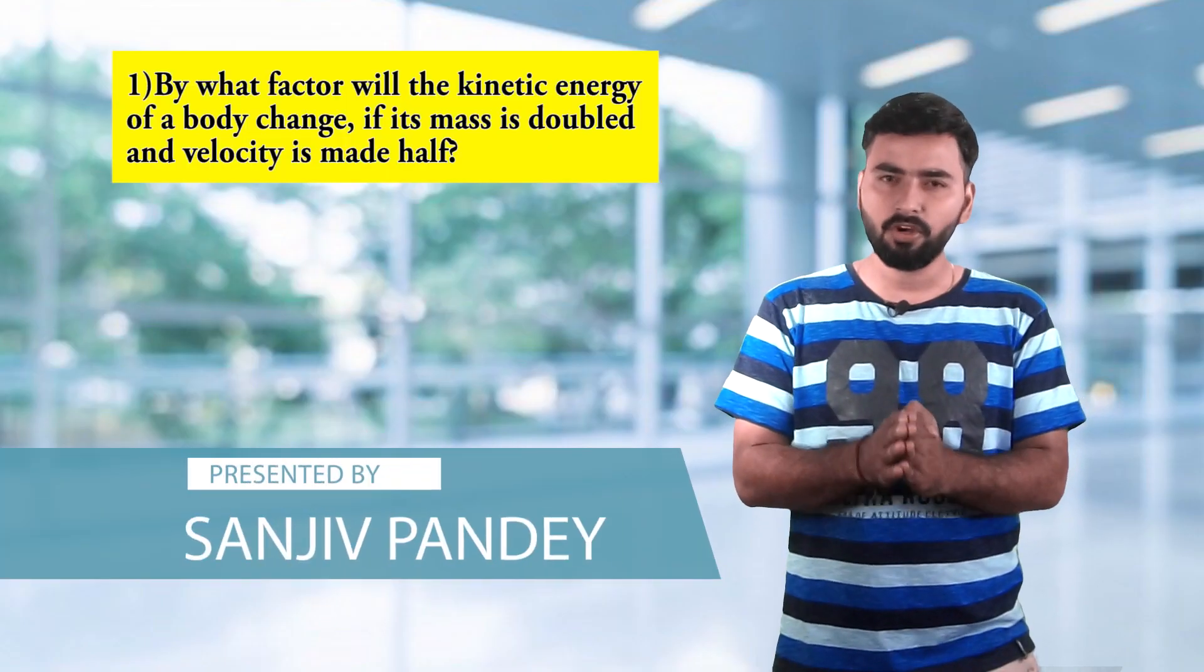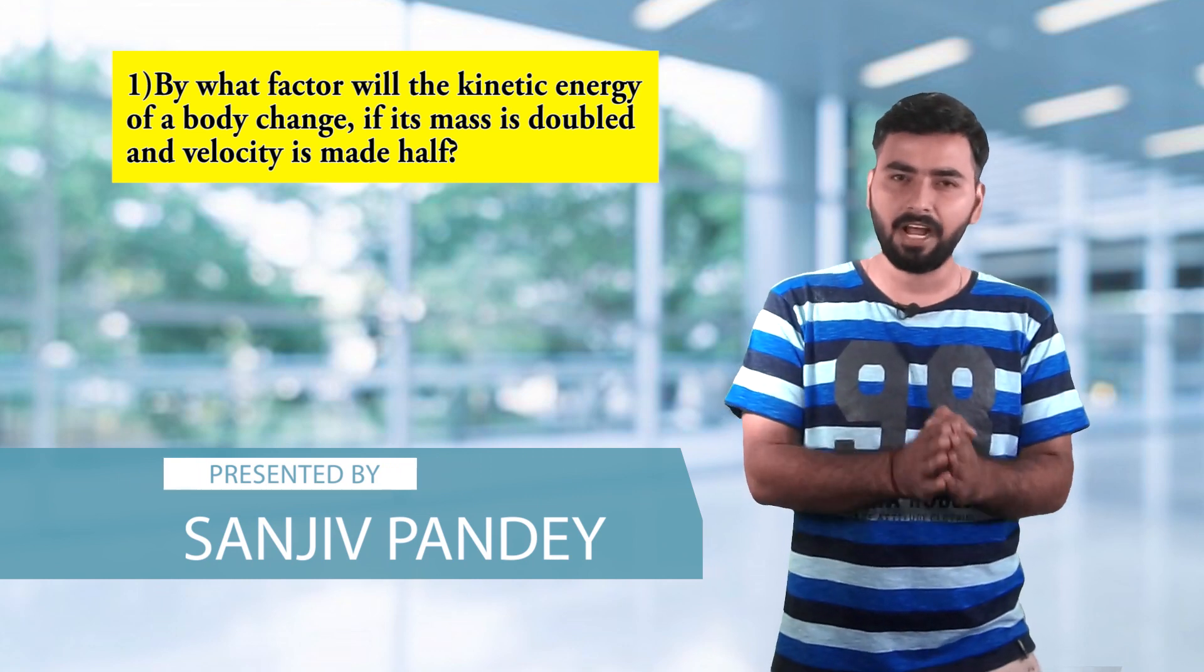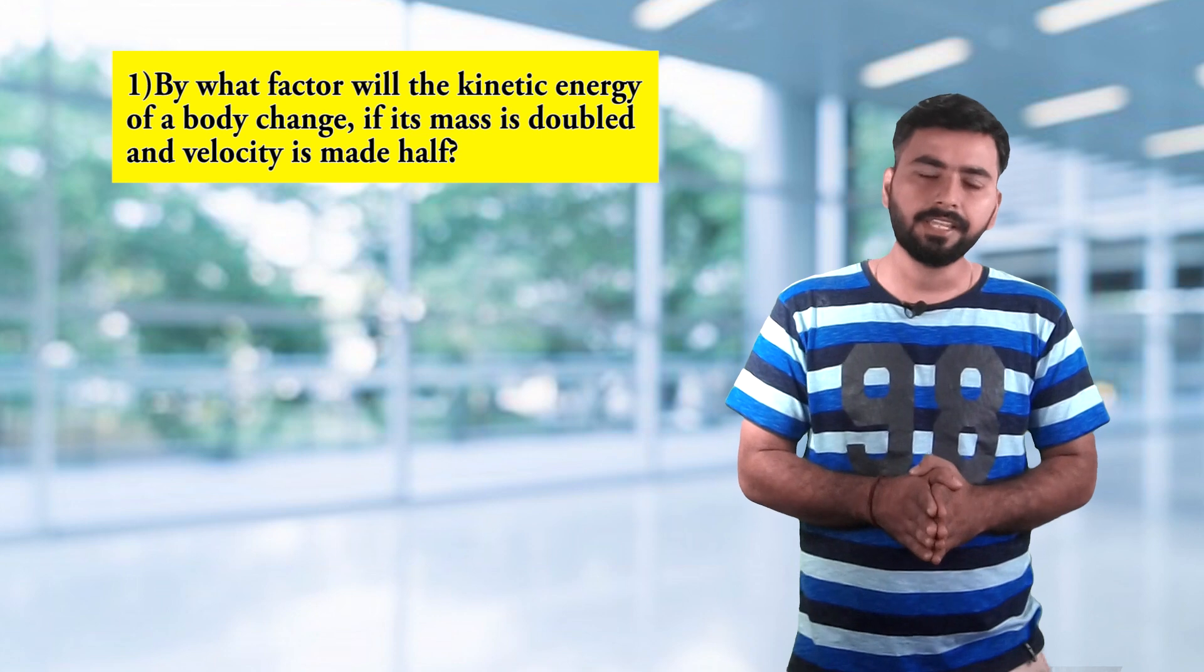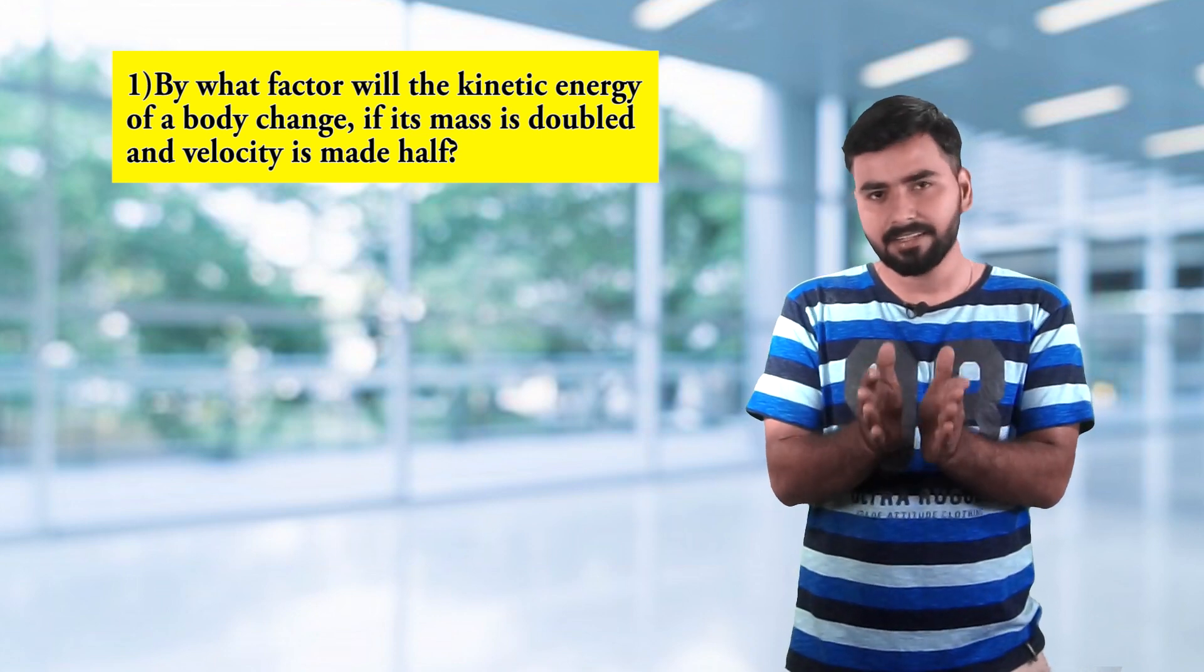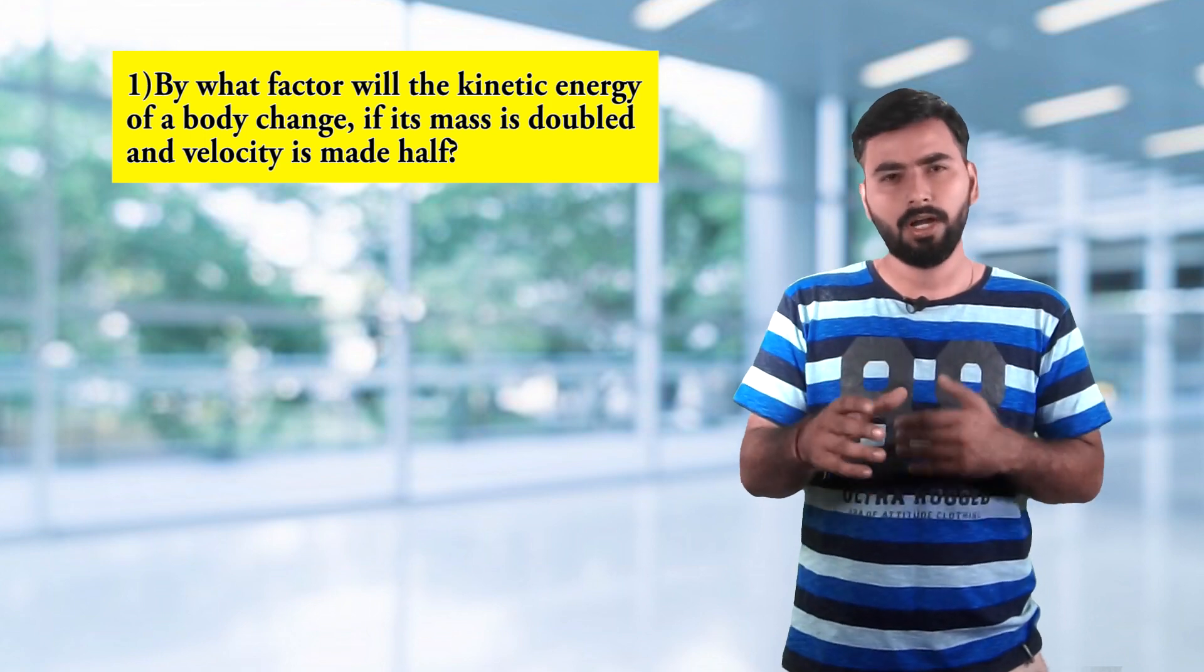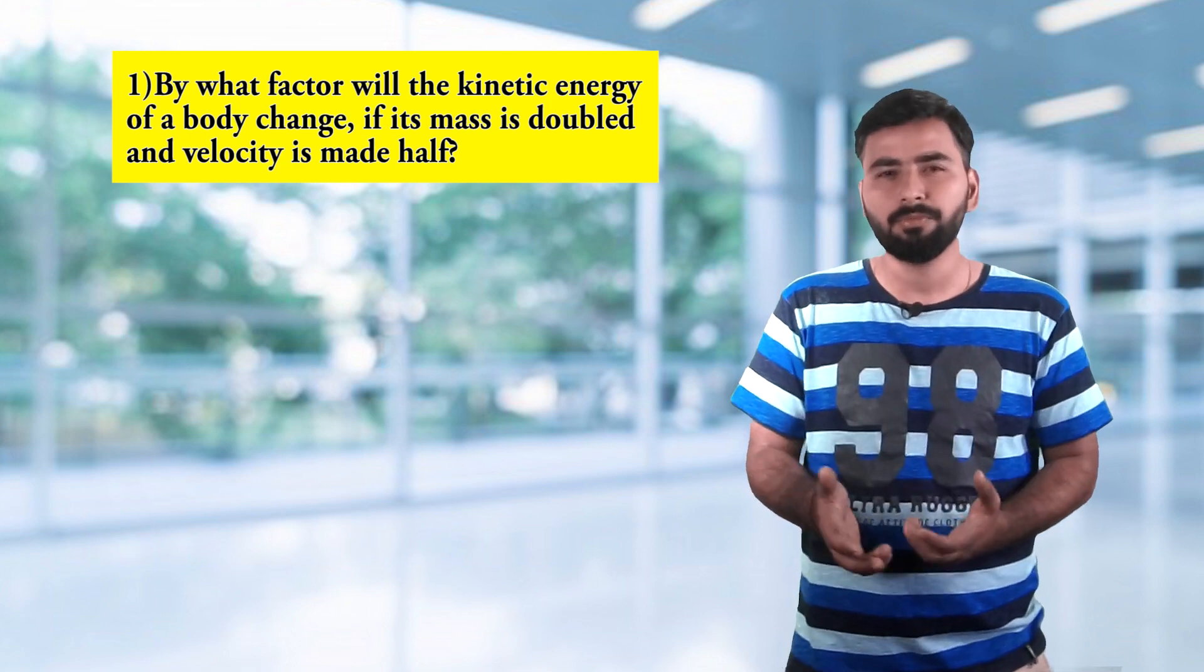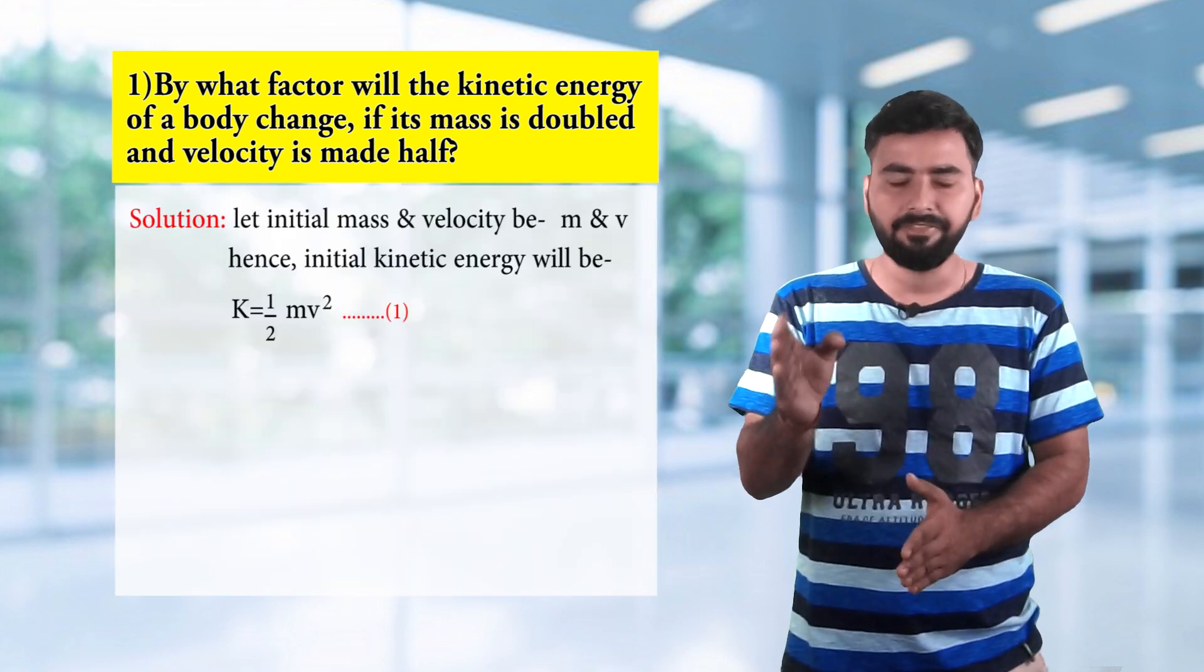The first question is: by what factor will the kinetic energy of a body change if its mass is doubled and velocity is made half? Now we can see here we have no values given, so let the initial mass and velocity be m and v.